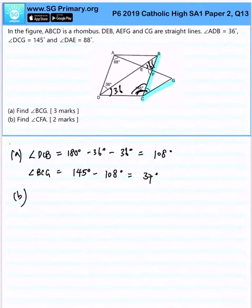You are interested to find angle CFA, this particular angle over here. First step, I would like to find angle FAB, which will be 180 degrees minus 88 degrees minus 88 degrees, equal to 20 degrees.